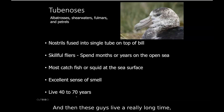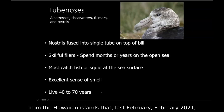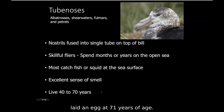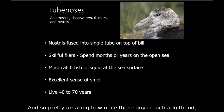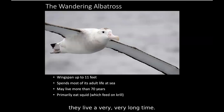These birds live a really long time — 40 to 70 years. There's actually a Laysan albatross named Wisdom from the Hawaiian Islands that in February 2021 laid an egg at 71 years of age. Once these birds reach adulthood, if they can make it there, they live a very, very long time.